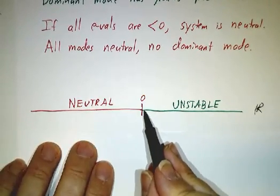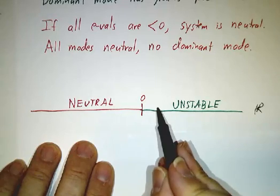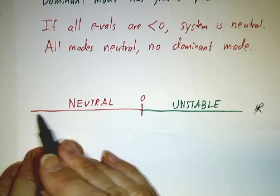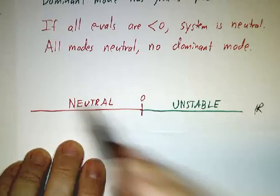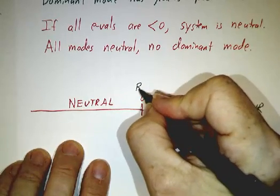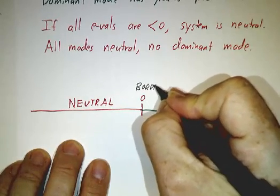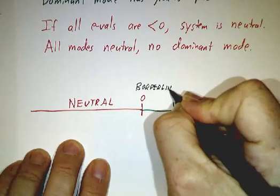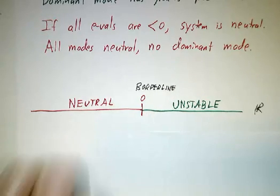The eigenvalues that are bigger than zero are unstable. The eigenvalues that are less than zero are neutrally stable. And zero is borderline. So that's the story for second order differential equations.